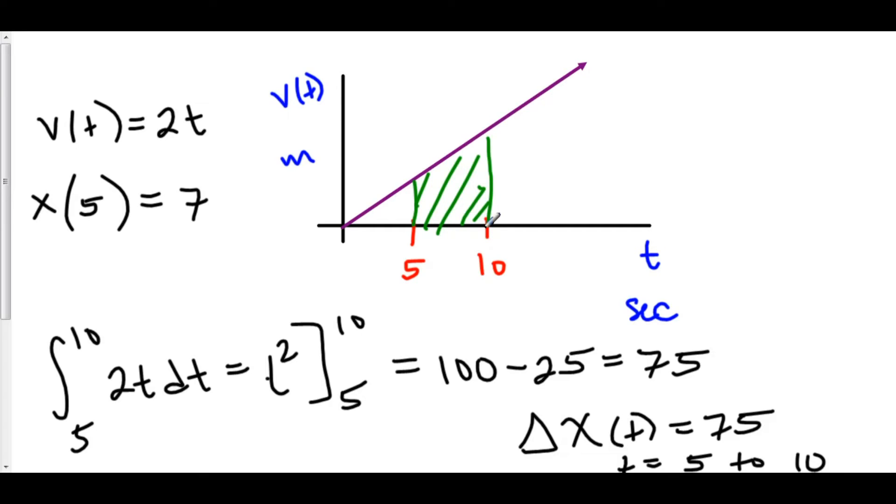So for the sake of argument, let's just say that the position at time 5 is equal to 7. Now we started off at position 7, or 7 to the right of 0. Well, that means that if my position at time 5 is 7, and my change in position from time 5 to time 10 is 75, then it would stand to reason that my new position is 7 plus 75.